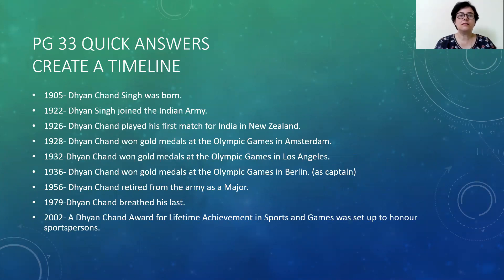Quick answers. It says create a timeline. So these are the dates given and you have to write what happened in that year. So 1905 — Dianjan Singh was born.